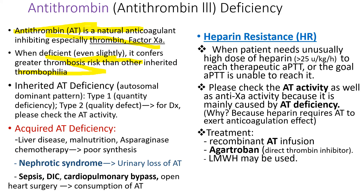Antithrombin deficiency can be either inherited or acquired. Acquired antithrombin deficiency is important clinically. Patients with liver disease develop antithrombin deficiency because antithrombin is synthesized in the liver. The chemotherapy drug asparaginase inhibits the synthesis of antithrombin; this drug is used for acute lymphocytic leukemia. Patients with nephrotic syndrome lose antithrombin, which is a protein, into the urine, so nephrotic syndrome is associated with a hypercoagulability condition.